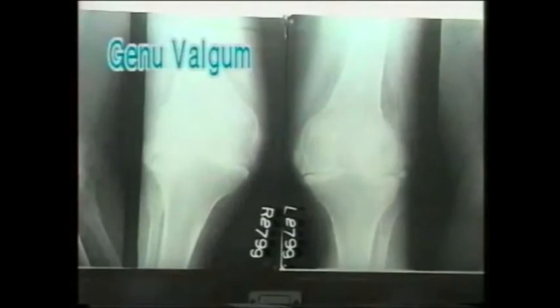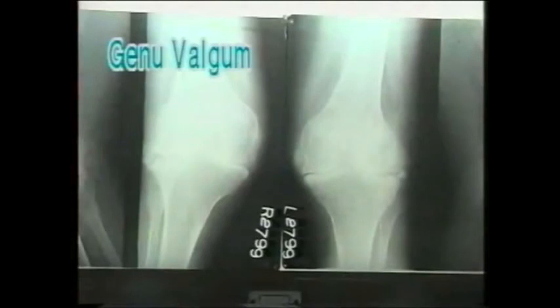This is an advanced stage of the disease with deformity. The leg — that is, the tibia — is angulated laterally. This is genu valgum: a lateral angulation of the tibia on the femur.